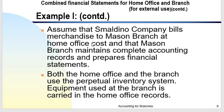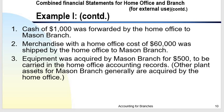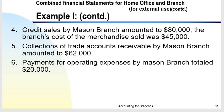Assume that Dino Company bills merchandise to Mason Branch at cost. Mason Branch maintains complete accounting records and prepares financial statements. Both the home office and the branch use the perpetual inventory system. Equipment used at the branch is carried in the home office books. Expenses such as advertising and insurance incurred by the home office on behalf of the branch are billed to the branch. Transactions during the first year of operations of Mason Branch in 2019 will be discussed one by one.